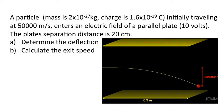So a typical problem would look like this. A particle, there's the mass, there's the charge, initially traveling at 50,000 meters per second, enters an electric field of a parallel plate, 10 volts. The plate separation distance is 20 centimeters. Determine the deflection and calculate the exit speed.